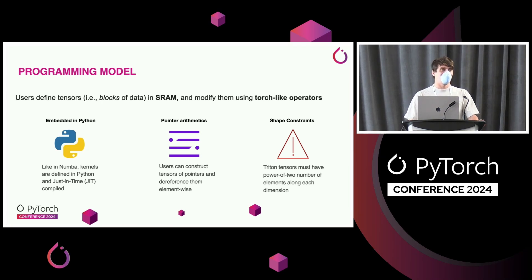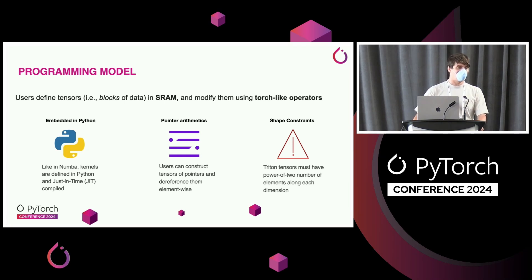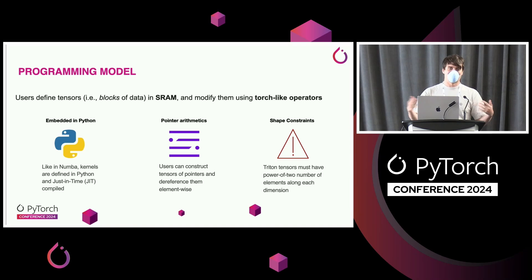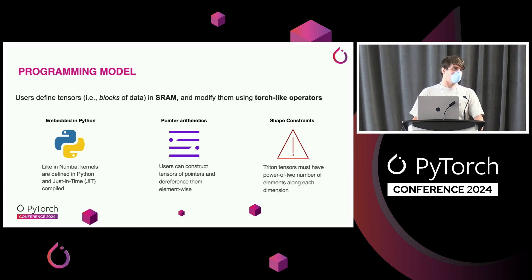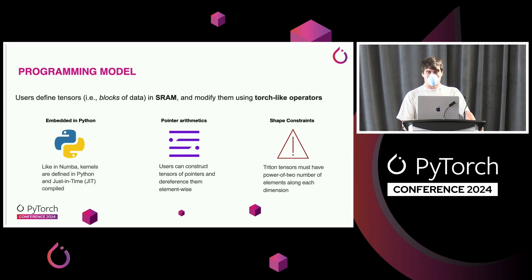An important feature of Triton is that it supports pointers. You can have tensors of pointers, dereference them, and that will bring tensors of values into SRAM. One limitation today is shape constraints — tensor shapes have to be powers of two along all dimensions, which can be constraining, but in general is okay because you deal with tiles of data.